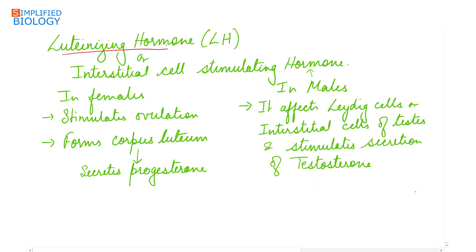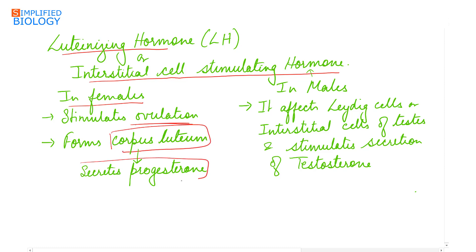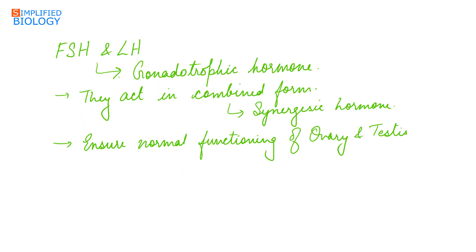Luteinizing hormone (LH), also referred to as interstitial cell stimulating hormone, in females stimulates ovulation and forms corpus luteum, which secretes progesterone. In males, it is referred to as interstitial cell stimulating hormone and affects the Leydig cells (interstitial cells) of the testes, stimulating secretion of testosterone.